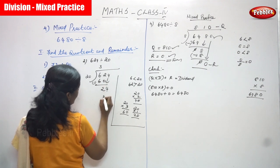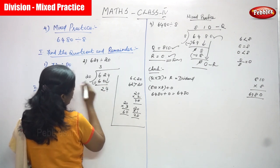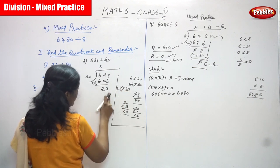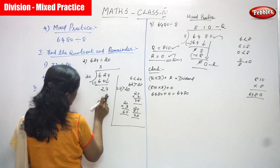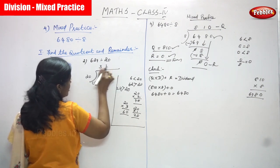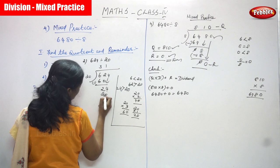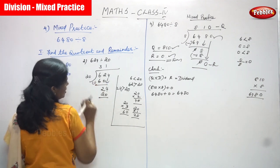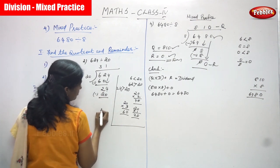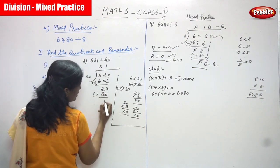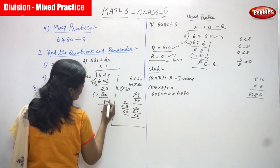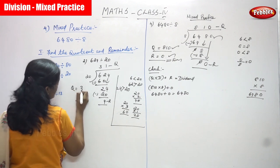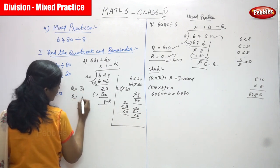Bring down the 4. Now we have 24. 24 is greater than 20, so in 24, how many times does 20 go? Only 1 time. 20 ones are 20. 1 into 20 gives 20. Then 24 minus 20: 4 minus 0 gives 4. So the remainder is 4 and the quotient is 31.